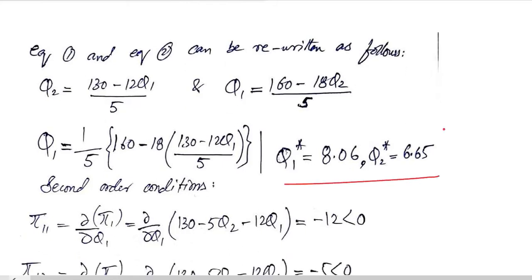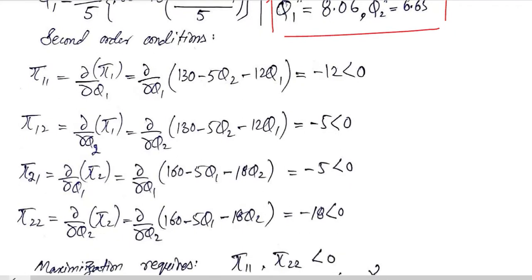Here you can see these are the critical values. Now we can go to the second order conditions for which π11, π12, π21, and π22 are calculated, which are the derivative of π1 with respect to Q1, derivative of π1 with respect to Q2, derivative of π2 with respect to Q1, and derivative of π2 with respect to Q2. The answers are found.